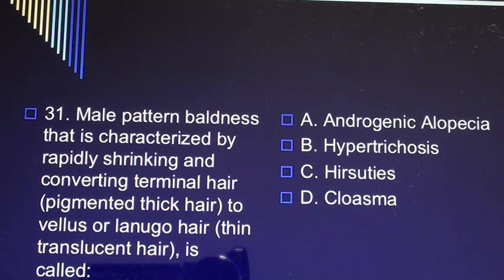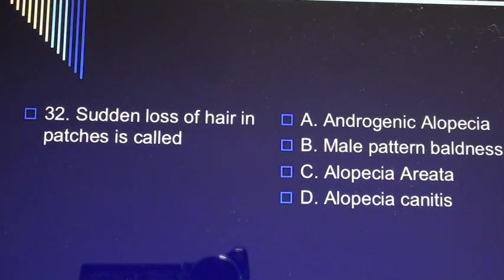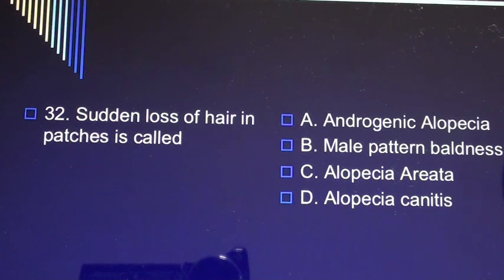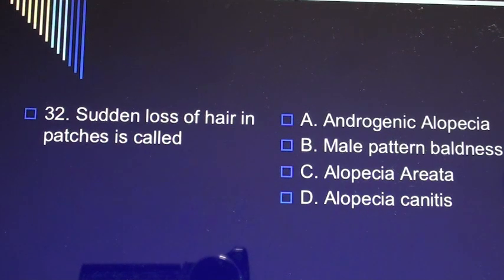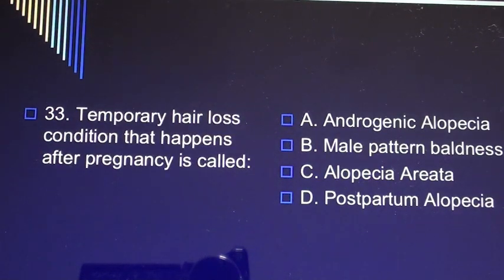Question 32: Sudden loss of hair in patches is called A) androgenic alopecia, B) male pattern baldness, C) alopecia areata, D) alopecia canities. Question 33: Temporary hair loss condition that happens after pregnancy is called A) androgenic alopecia, B) male pattern baldness, C) alopecia areata, D) postpartum alopecia.